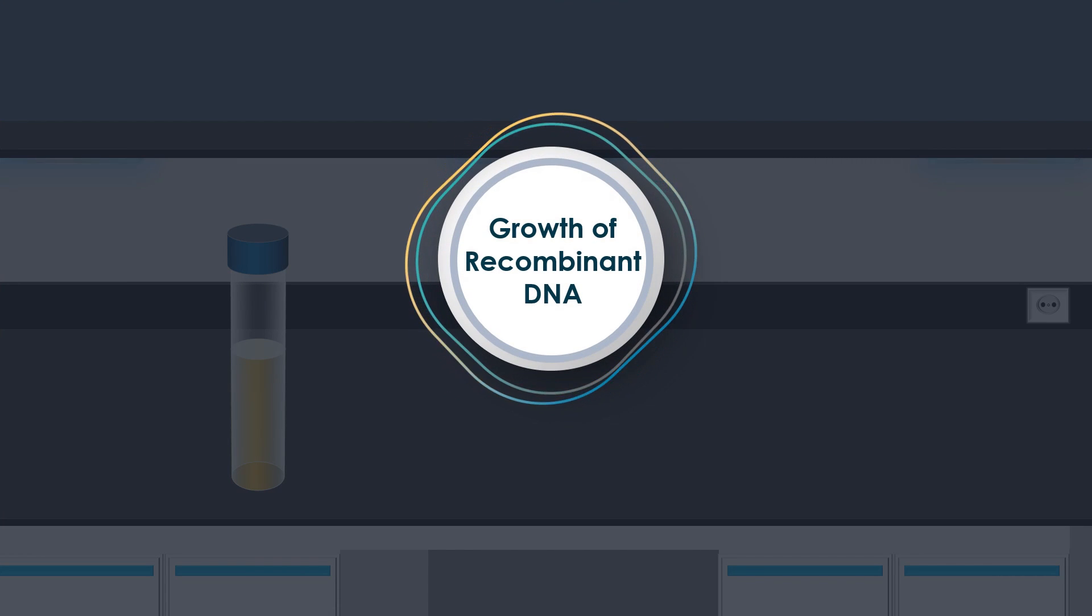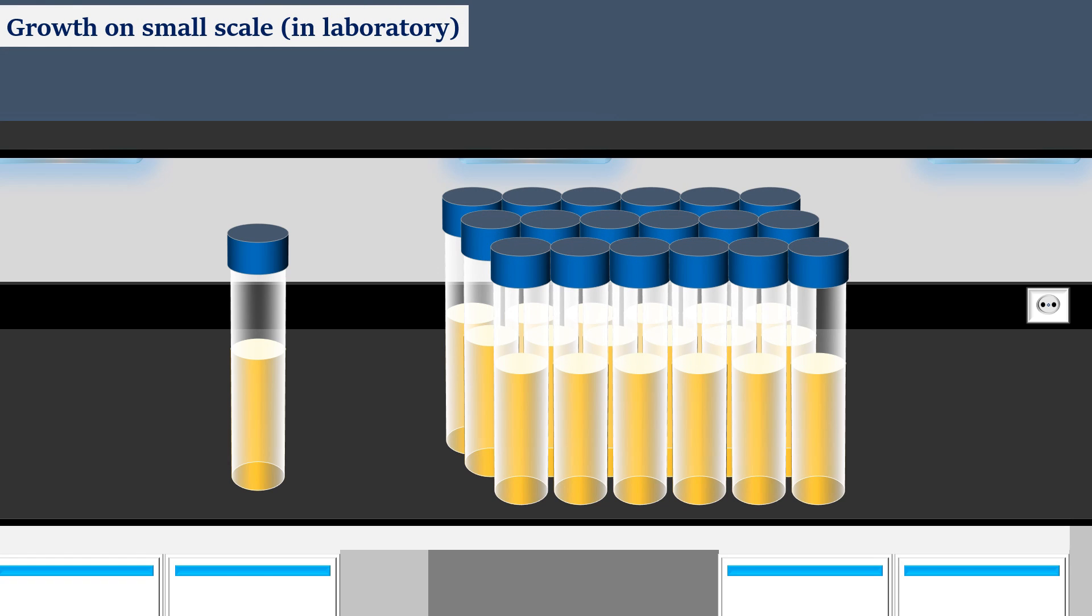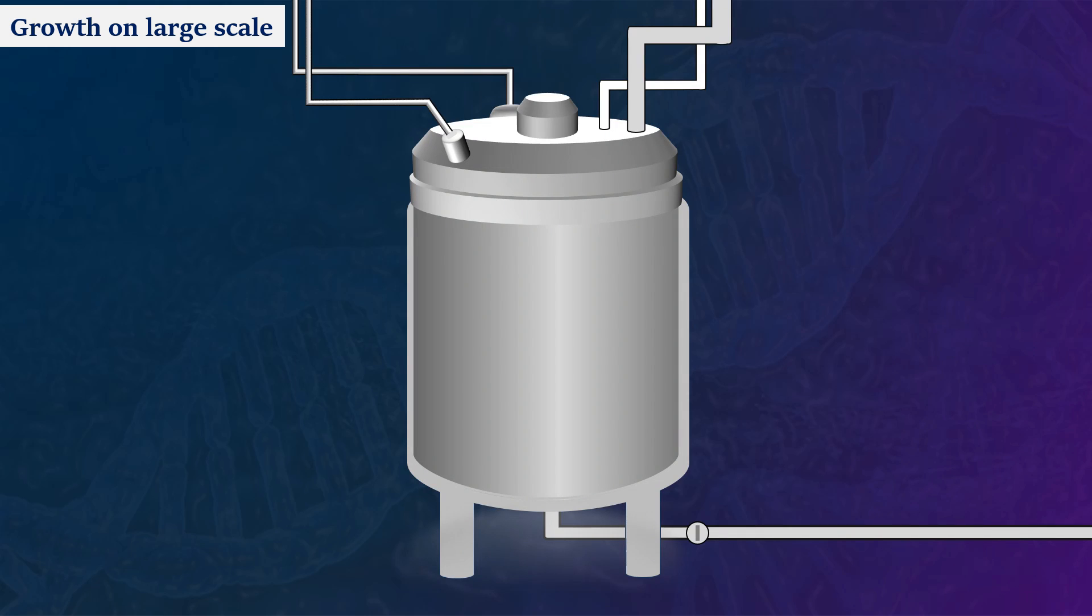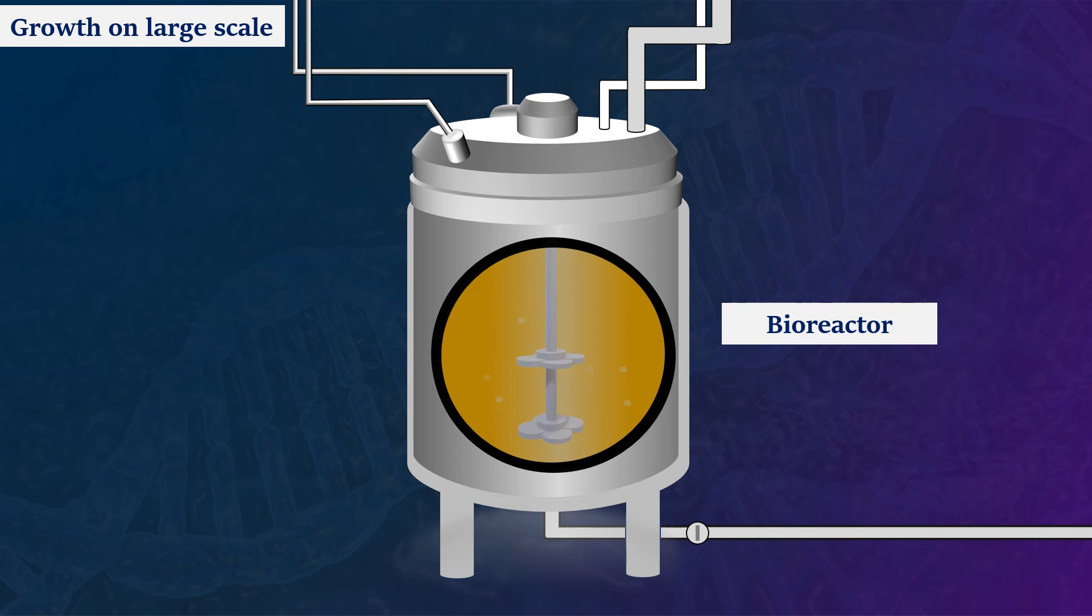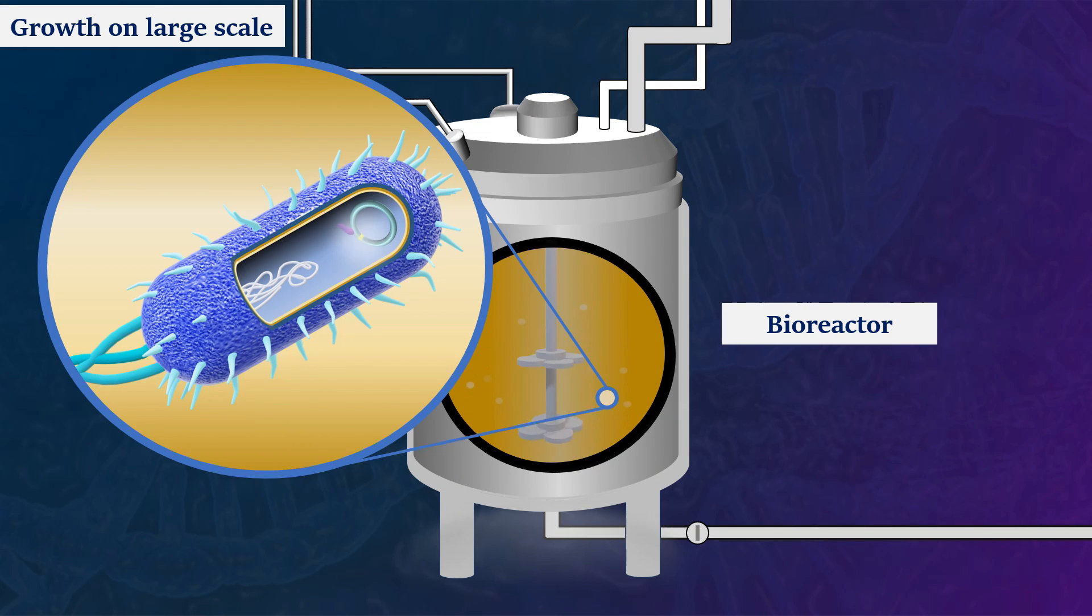Following that, the next step involves the growth of the recombinant DNA. This can be done on a small scale, typically in a laboratory setting. The culture medium containing our transformed bacterial cells is used for generating additional cells that have the capability to produce our desired protein. Alternatively, production on a large scale can be achieved using large vessels, known as bioreactors. These vessels are specifically designed for processing substantial volumes of cultures for optimal bacterial cell multiplication. A bioreactor provides the optimal conditions necessary to achieve the desired product efficiently.